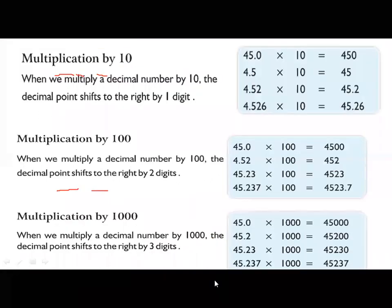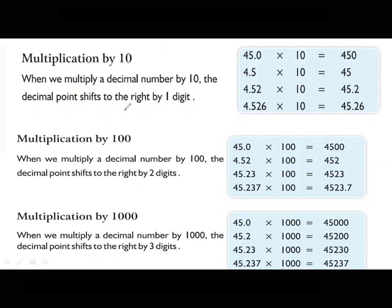Next: multiplication by 10, 100, and 1000. When you multiply a decimal number by 10, the decimal point shifts to the right by one digit. For example, 45.0 multiplied by 10 is 450 — the decimal point shifts right by one digit. Similarly, 4.5 multiplied by 10 gives 45, because the decimal point shifts to the right by one digit.